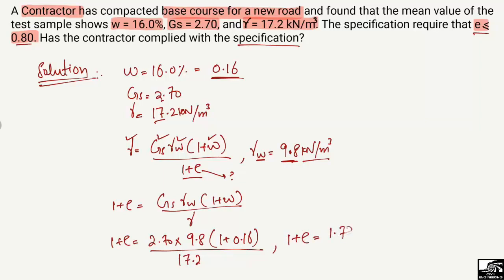Evaluating this expression gives 1 + e = 1.78. Subtracting 1 from both sides, we get e = 1.78 − 1 = 0.78, which is very close to, but less than, the specification value of 0.80.